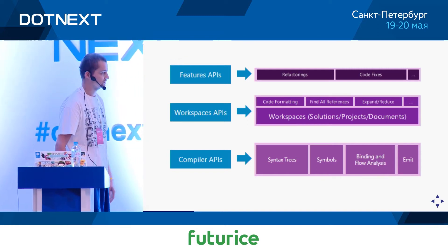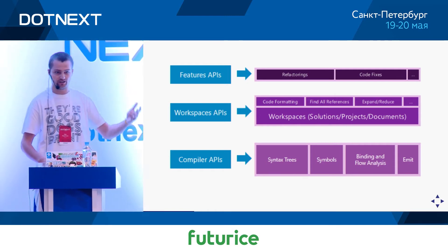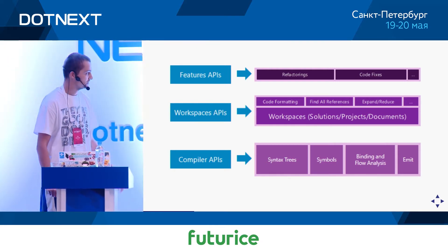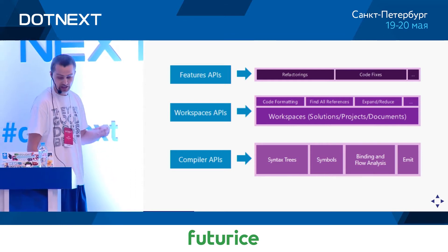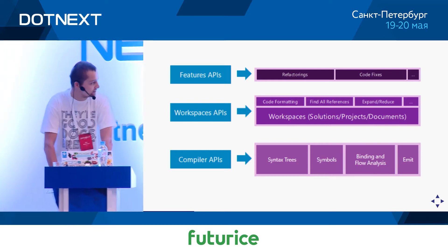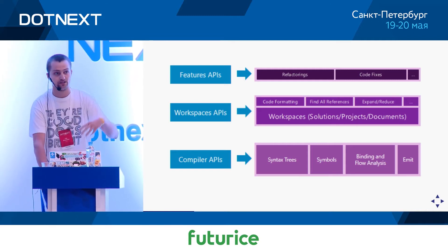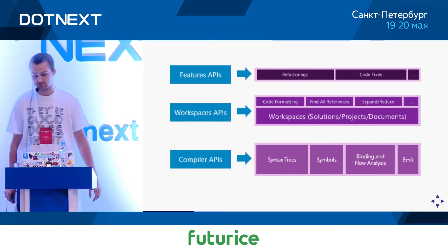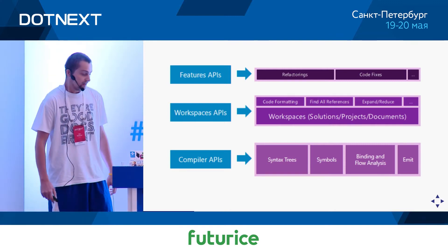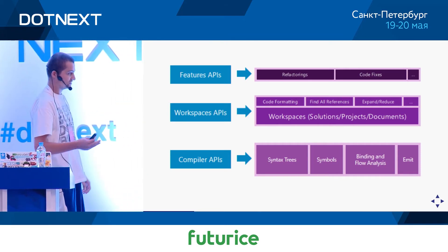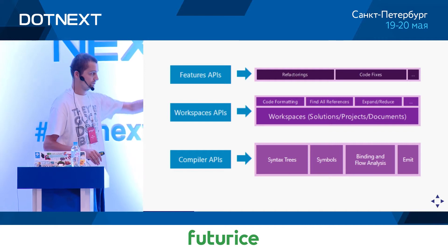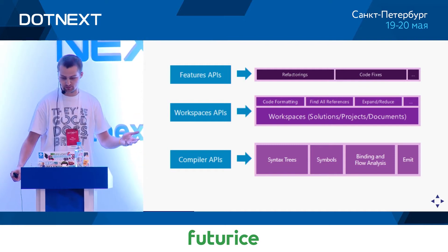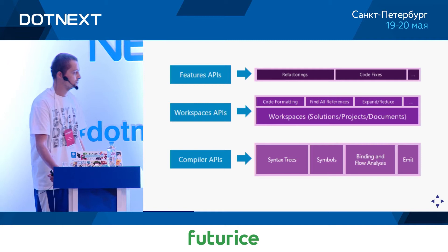In the next step — the declaration phase — named symbols are formed and metadata is imported. Then in the binding phase, identifiers from source are matched with symbols, and ultimately the compilation can be emitted and bytecode produced. These steps are important because Roslyn has an API that allows us to interact with artifacts produced at each step. This is very powerful, and we will be doing code analysis together in a moment.